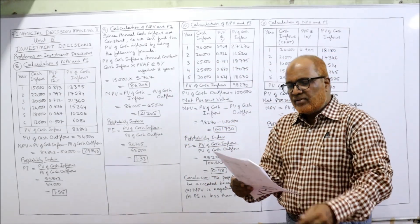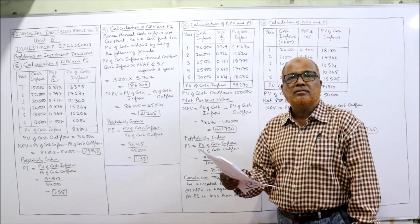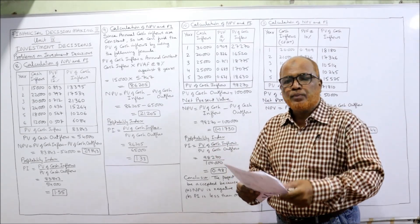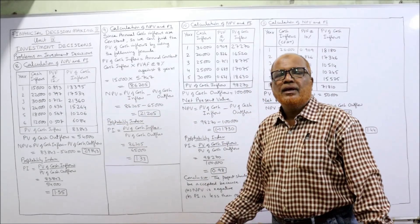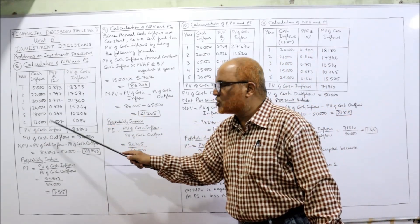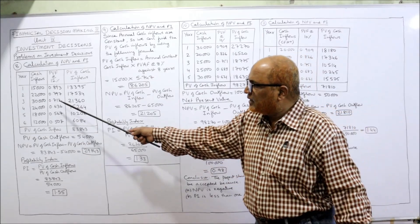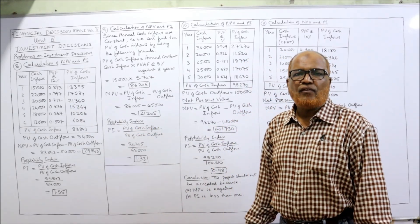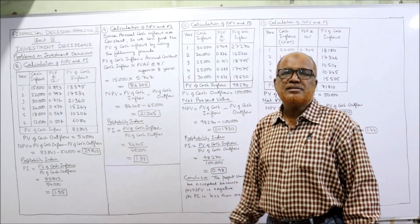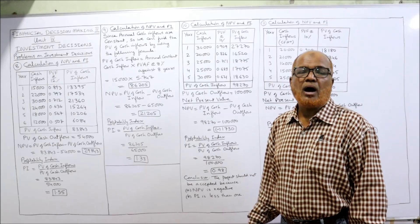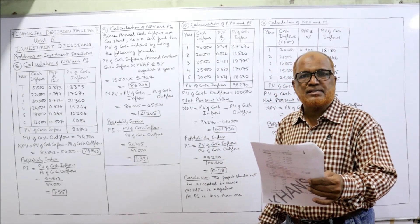Problem number 9: An investment project requires an initial investment of 65,000. It is expected to generate 15,000 per annum for 8 years. The key difference from the previous problem is that the annual cash inflows are constant, not fluctuating. When cash inflows are constant, we can either use a table or use the annuity formula directly. The cost of capital is 8%. Find the NPV and PI.